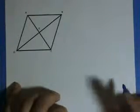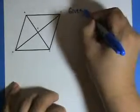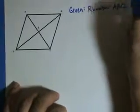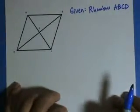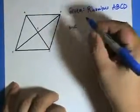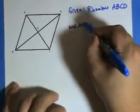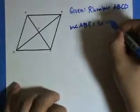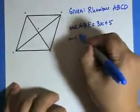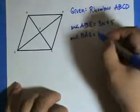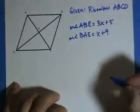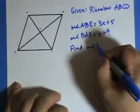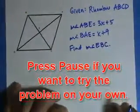Given this is a rhombus ABCD, we're given measure of angle ABE equals 3x plus 5 and measure of angle BAE equals x plus 9. We want to find measure of angle EBC.